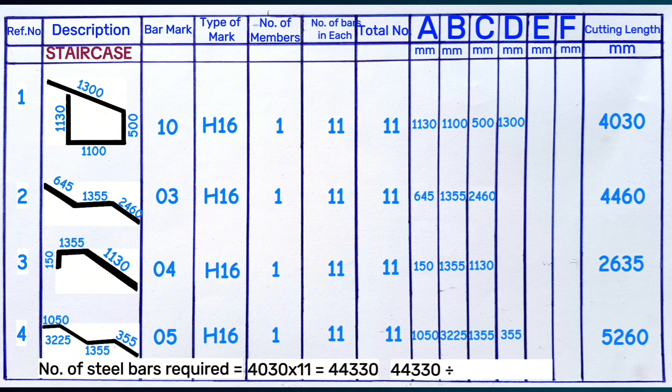Each steel bar is 12 meters long. Therefore, when you get the total length and divide by the length of one steel bar, you get 3.69, which is equivalent to four steel bars. Therefore, to cater for this steel bar shape, we need 4 steel bars of H16.